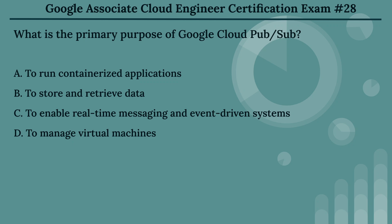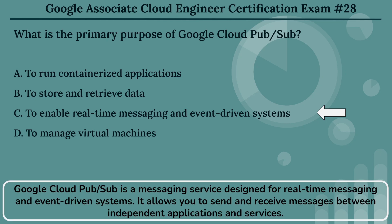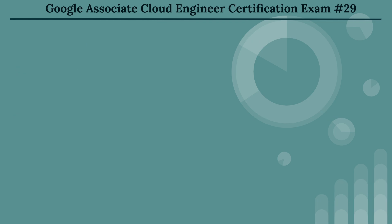The right answer is Option C: to enable real-time messaging and event-driven systems. Google Cloud Pub/Sub is a messaging service designed for real-time messaging and event-driven systems. It allows you to send and receive messages between independent applications and services.